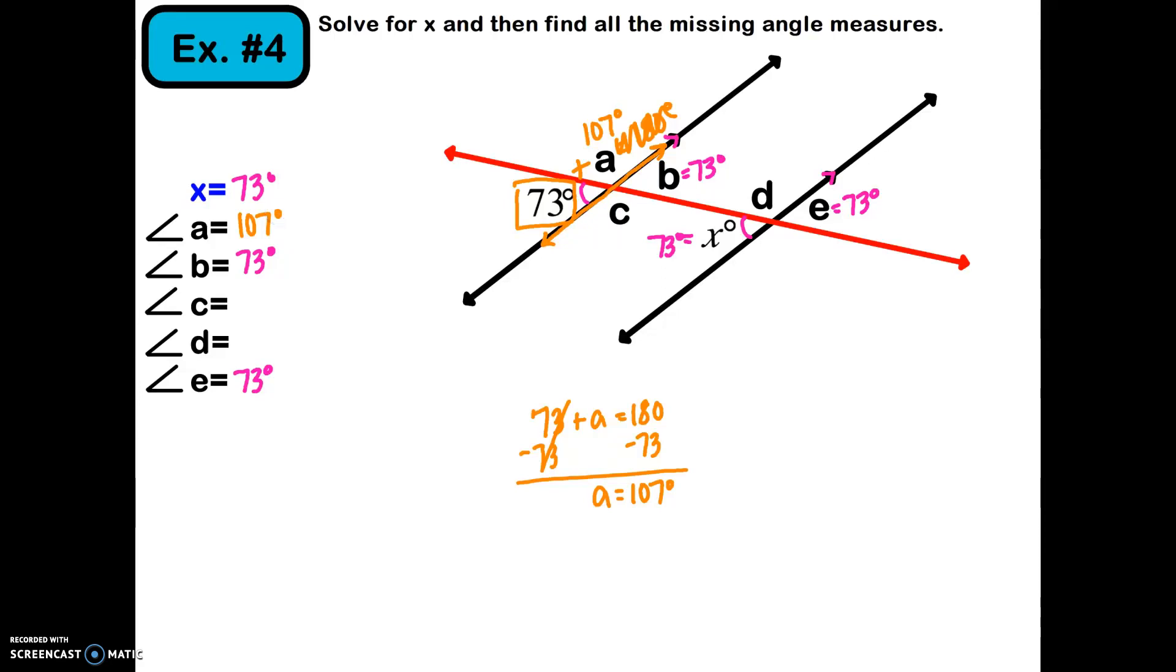What corresponds with a? A is in the top of that pair of intersecting lines, and d is also in the top of the other set of intersecting lines. So d is also 107 degrees.